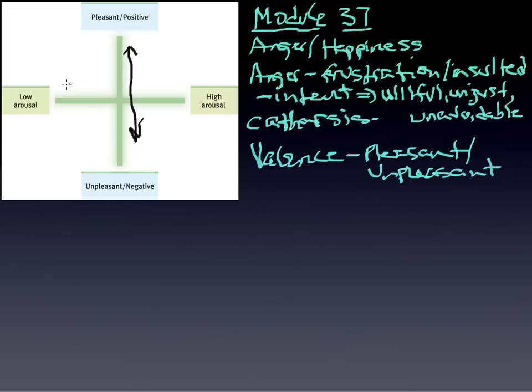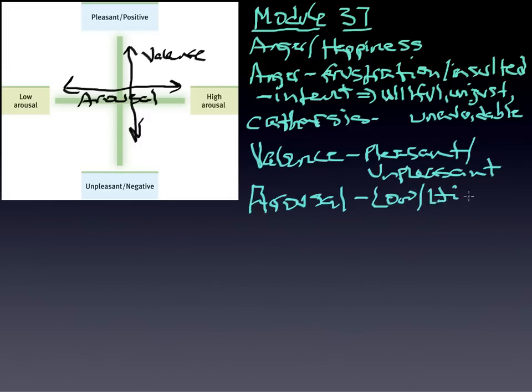The second axis is a matter of arousal. So valence is one, and then the other one is arousal. So low arousal versus high arousal.